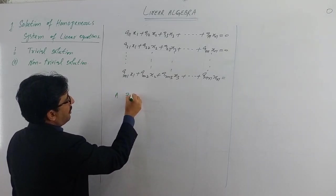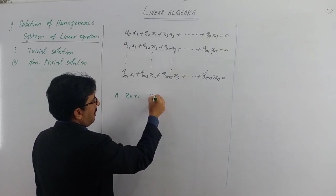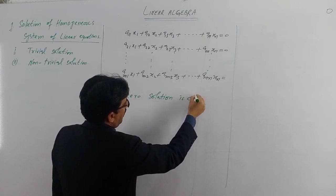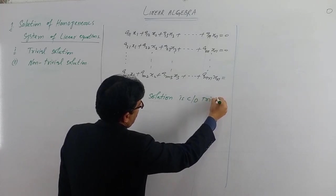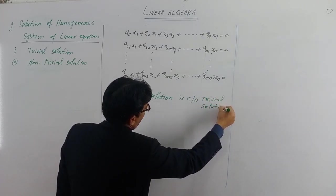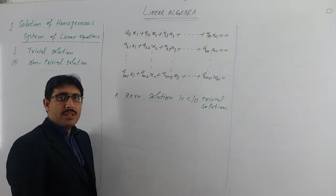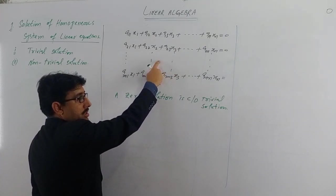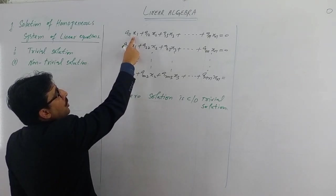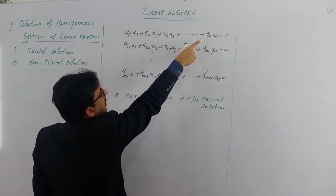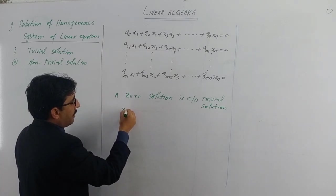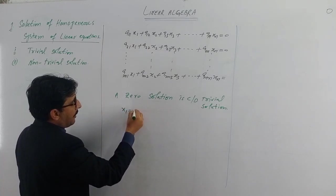A zero solution is called the trivial solution. In a system of homogeneous equations, by zero solution we mean that all the unknowns — x1, x2, x3, ..., xn — if all their values are zero, that is called the trivial solution.